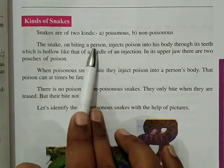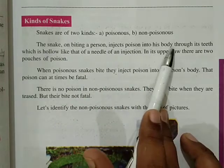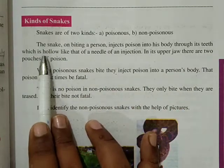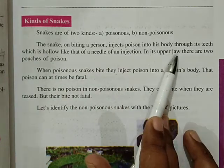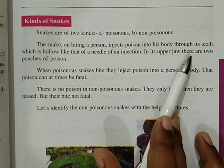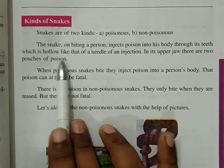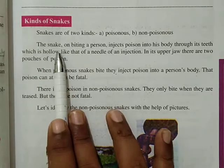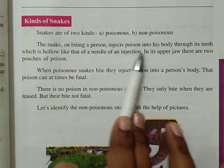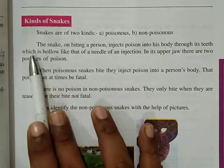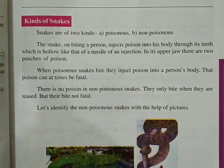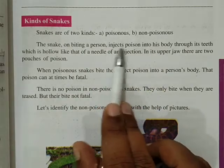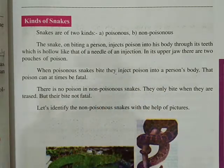The snake on biting a person injects poison into his body through its teeth, which are hollow like the needle of an injection. Is prakaar ke saamp jab kisi vyakti ko kaate hai, to kaate samay uski body mein apne teeth ke maadhyam se — jo ki unki teeth needle ke roop mein hoti hai, hollow hoti hai, matlab chhed-yukt hoti hai — uske maadhyam se woh uski body mein poison ko inject kar deta hai.